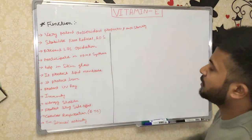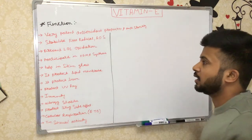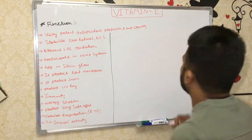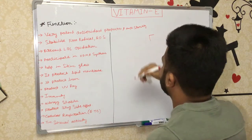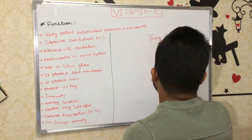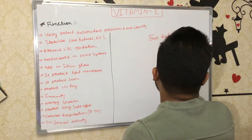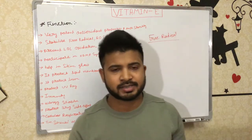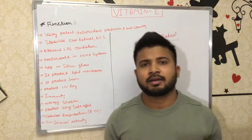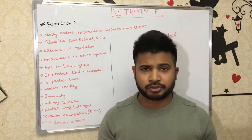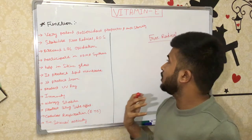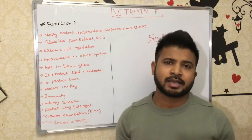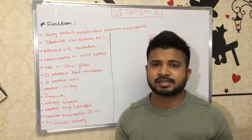Due to its antioxidant properties, Vitamin E stabilizes free radicals and reactive oxygen species. Let's briefly talk about what free radicals are. Free radicals, or reactive oxygen species, are waste products produced during metabolization or chemical reactions. In normal amounts, free radicals are actually good for health because they kill some pathogens — for example, bacteria, some viruses, and other microorganisms.